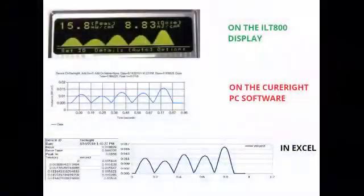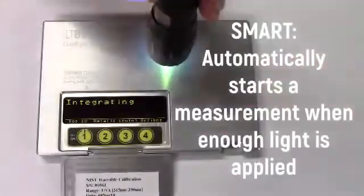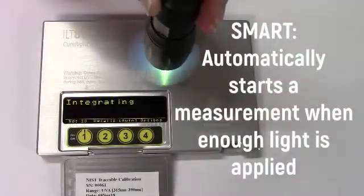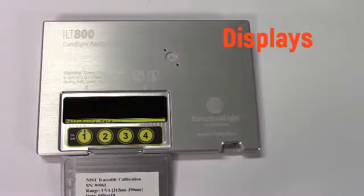With the ILT CureRight series, it's all about supplying the data you need to assure your process. The meter continuously analyzes the light level until the minimum threshold is met and automatically starts measuring.